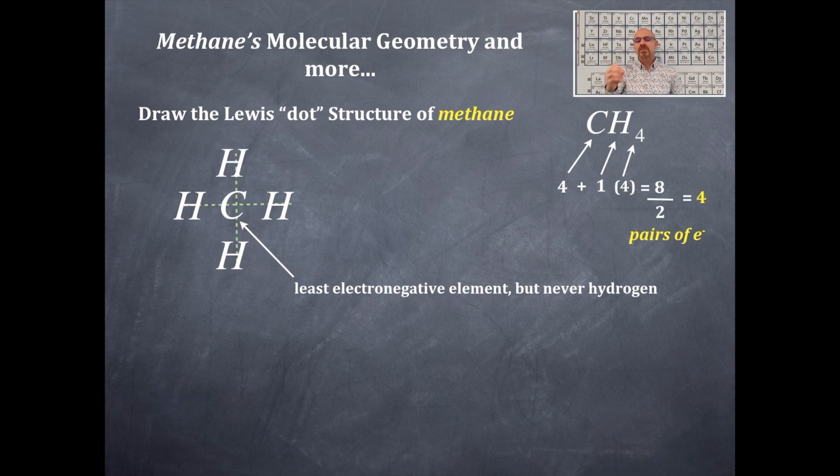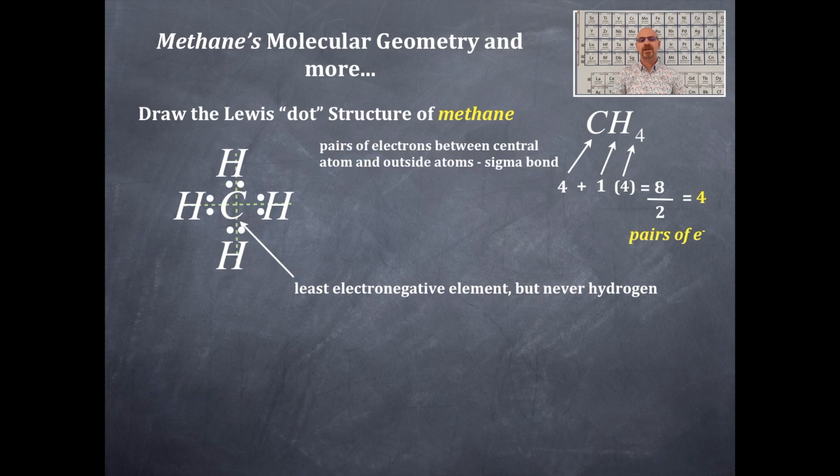Now I'll place these pairs of electrons following the order of drawing Lewis dot structures. The first rule is to place a pair of electrons between the central element and the outside elements. Those are each a single or sigma bond. I'll verify the octet rule for carbon—that's a go. Carbon is one of four elements in period two that must have an octet.